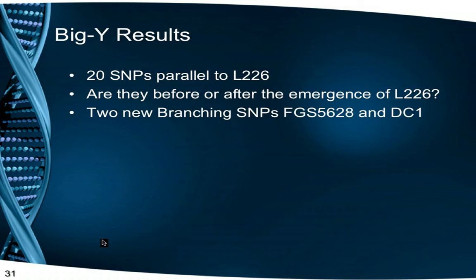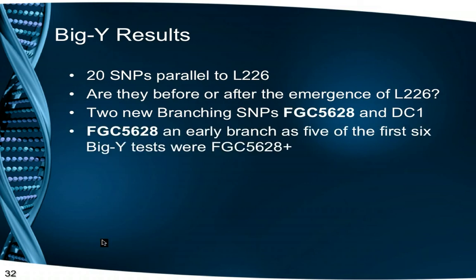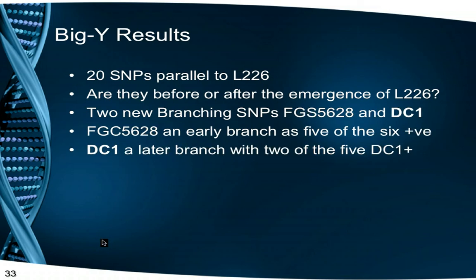We noted on those first series of men that there were at least two SNPs revealed branching under L226. In the first six men who took the test, FGC5628 was a new SNP that was positive — derived — for five of the participants but negative for one participant. This shows that this SNP occurred after all these men gained the L226 mutation, and this particular participant had branched from the main tree very early on. Of the five men that tested FGC5628 positive, two men tested positive for a second SNP, DC1, which falls below FGC5628 and represents a further branch. A third SNP, DC6, was also found parallel to DC1.